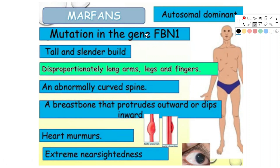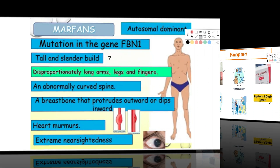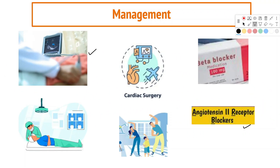Here is another flashcard to remember all the features related to Marfan syndrome: autosomal dominant mutation in gene FBN1, tall and slender build, disproportionately long arms, legs and fingers, abnormally curved spine, breast bone that protrudes outward or dips inward, heart murmurs, and extreme nearsightedness.